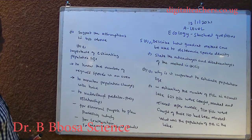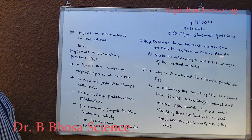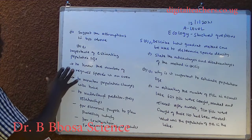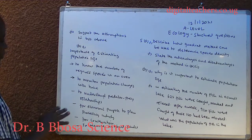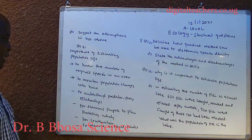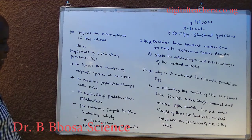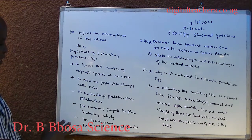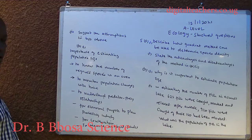B, part one. Importance of estimating population size: to know the number of required species in an area, to monitor population changes with time, to understand predator-prey relationships, for economic purposes, to plan processing industry, and for conservation.